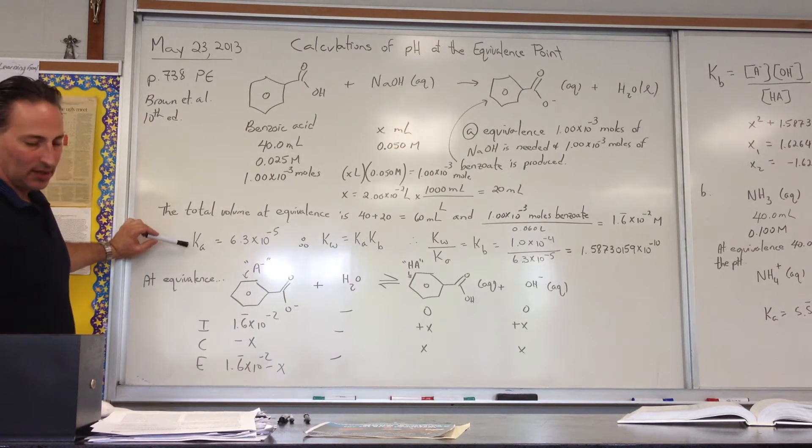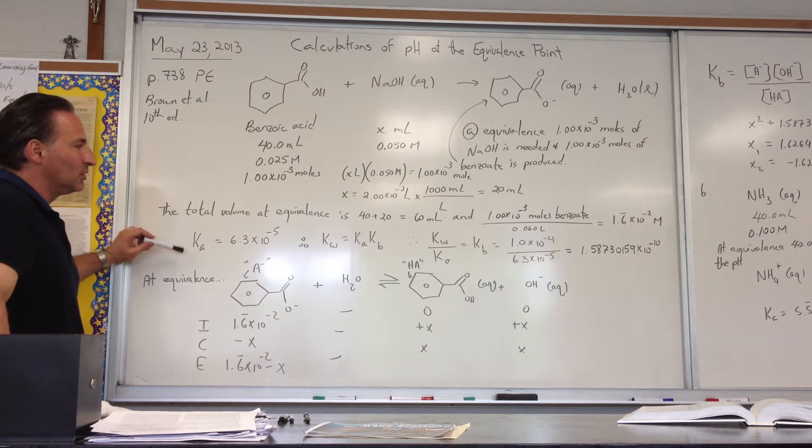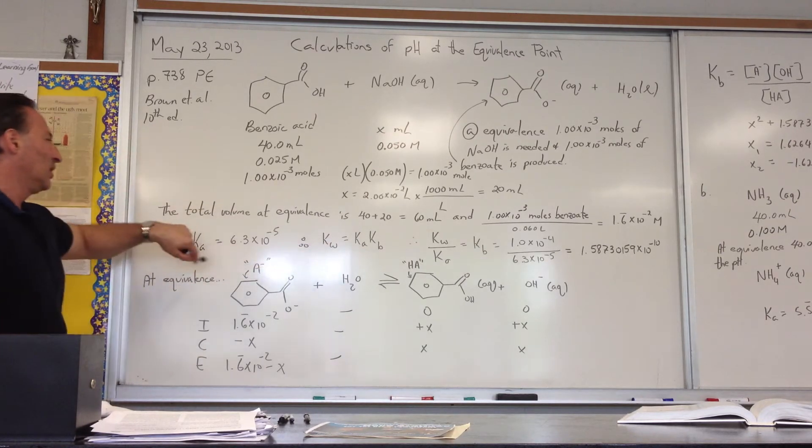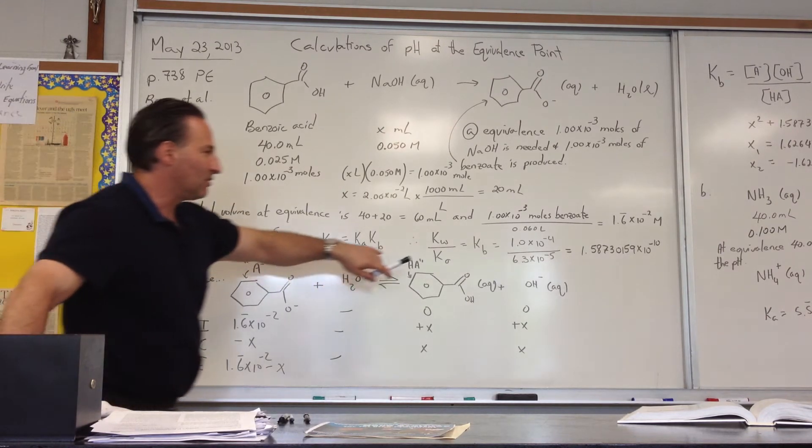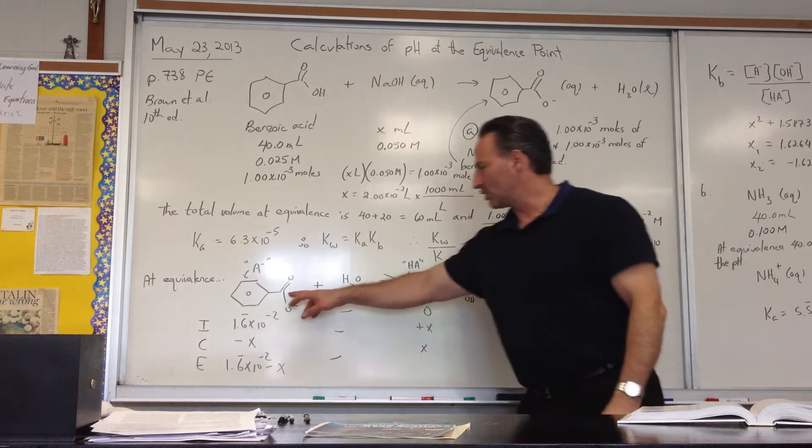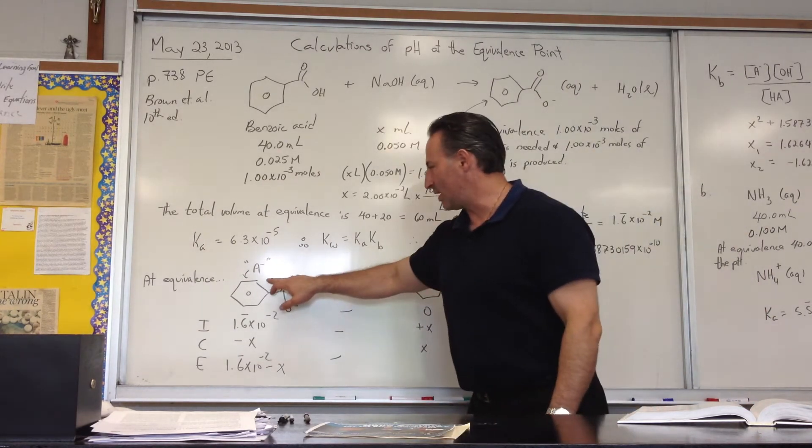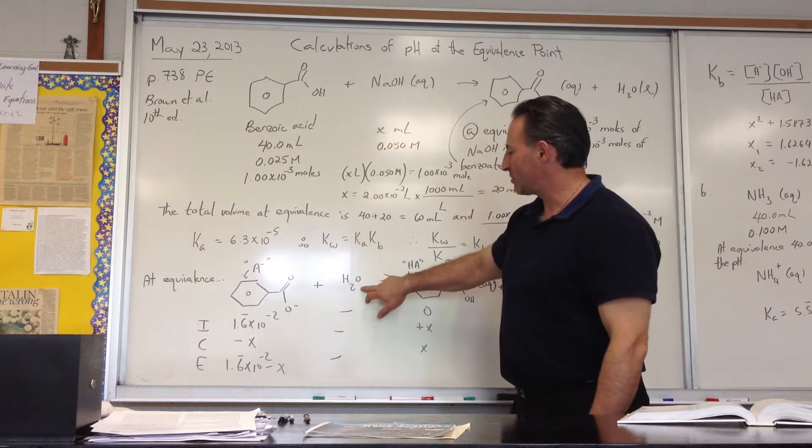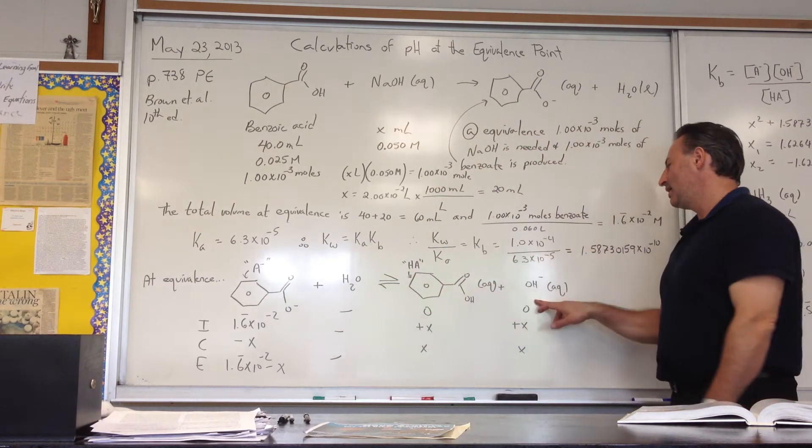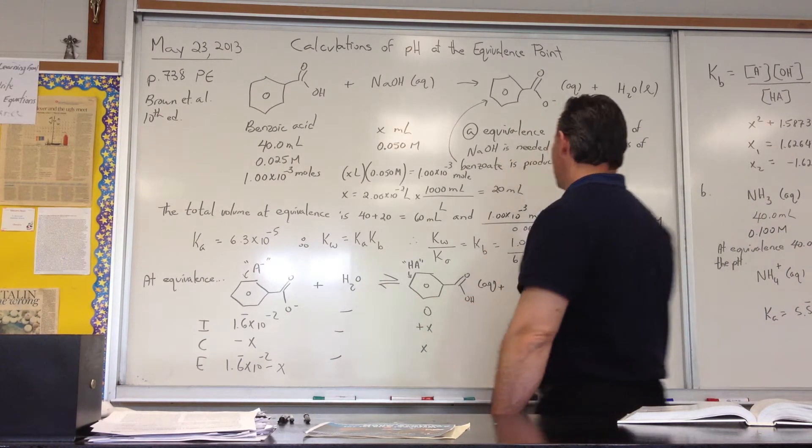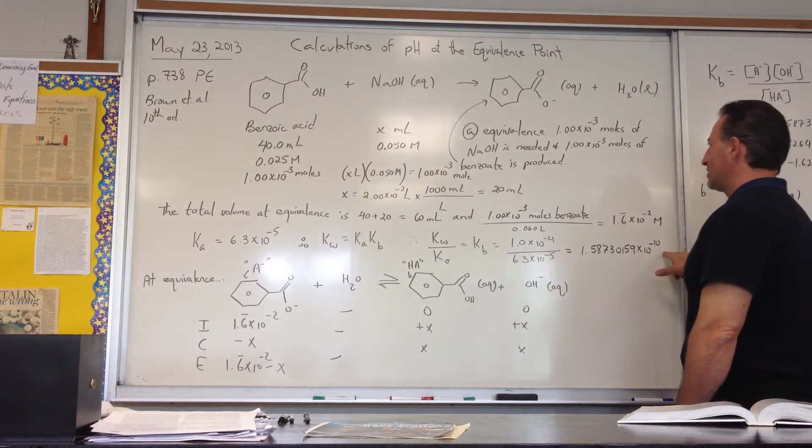The next step is to find out the Kb value of the benzoate anion, the conjugate base of this weak acid, benzoic acid. So we use the ion product of water to find out that Kb for this substance is 1.58 times 10 to the minus 10. We then show the next equilibrium that takes place. The benzoate anion, represented as A minus from now on, abstracts the proton from water and it generates benzoic acid and a hydroxide ion. This equilibrium proceeds with an equilibrium value of 1.58 times 10 to the minus 10.